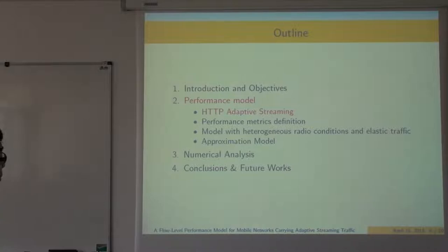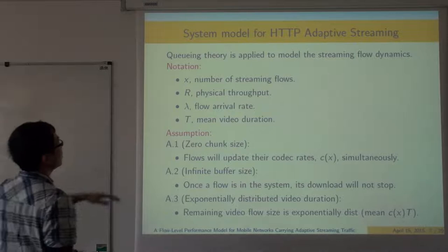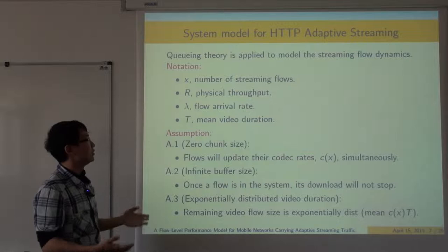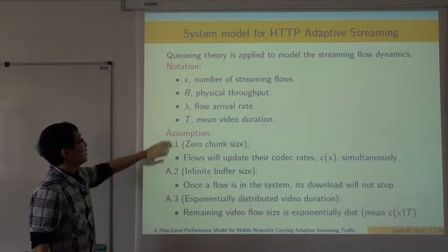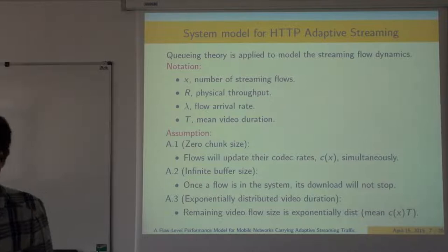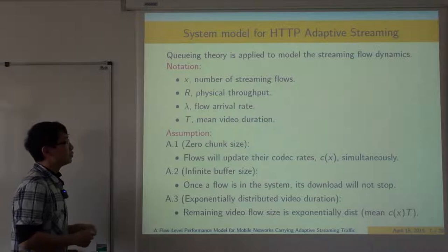Going into the performance model: I will first introduce the streaming model and then make it more complex. In our proposed system model for HTTP adaptive streaming, we assume there is an end user and streaming flows inside the system. Each streaming flow experiences the same channel condition, both having physical throughput R. We assume a flow arrival rate lambda, and the video duration users consume follows an exponential distribution with mean t. We set up these assumptions to make the system tractable using queueing theory.